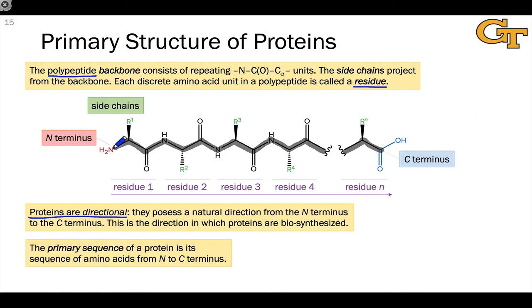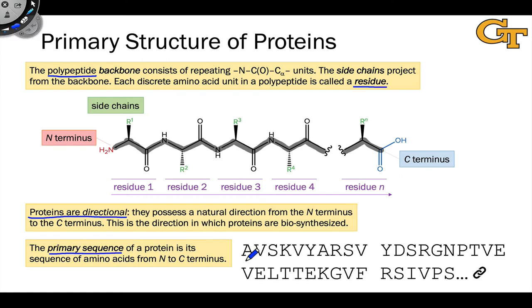The identities of the residues from the N-terminus to the C-terminus form the primary sequence of the protein. The primary sequence is typically represented as an ordered list or string of letters starting at the N-terminus and ending at the C-terminus, where each letter is the one letter abbreviation for the amino acid residue that appears at that position. So this polypeptide, for example, has the sequence alanine, valine, serine, lysine, valine, etc.